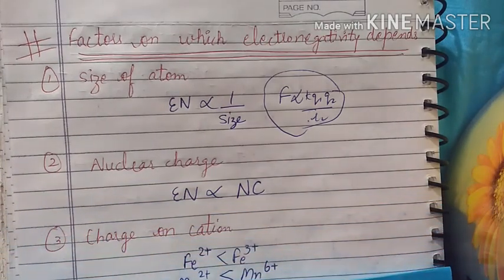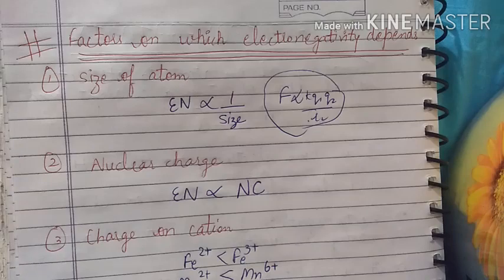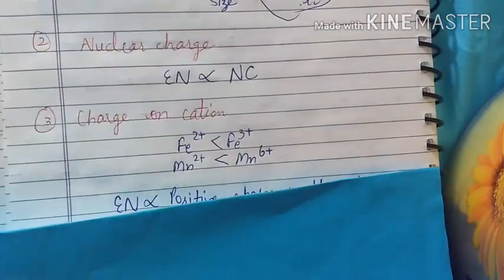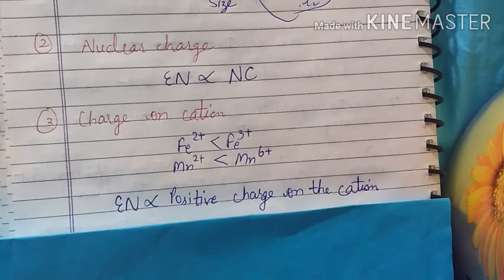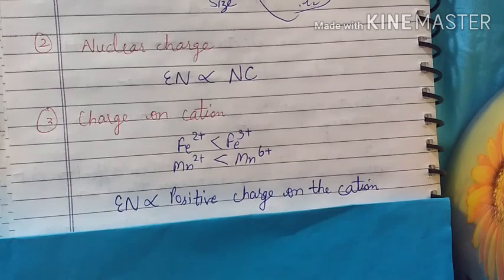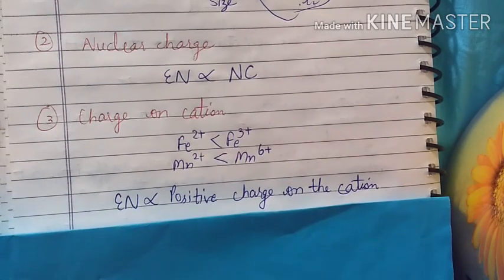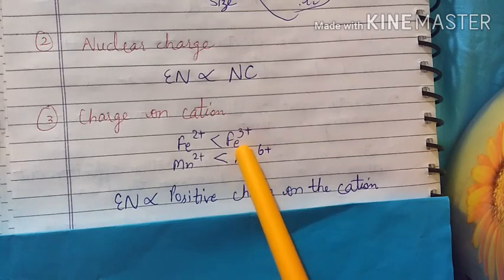Charge on cation. The greater the positive charge on the cation, the greater the electronegativity. Consider iron, Fe2+ and Fe3+. Fe3+ has more positive charge, so it has greater electronegativity.